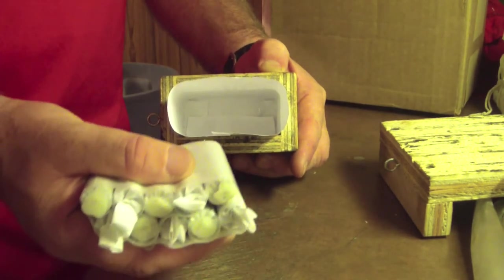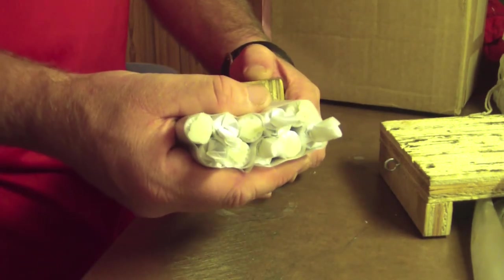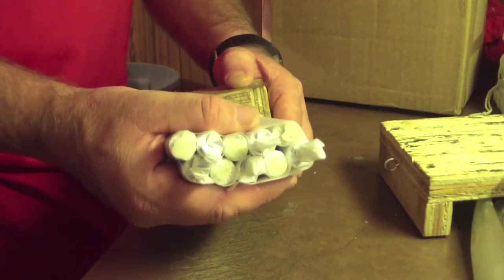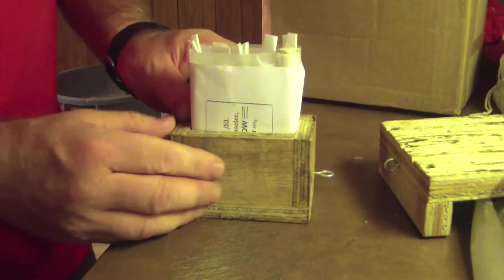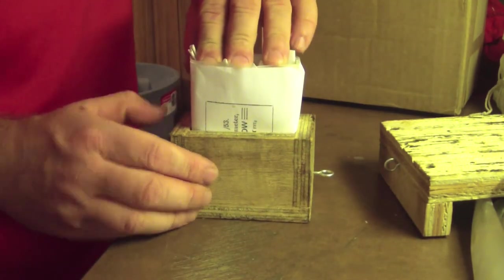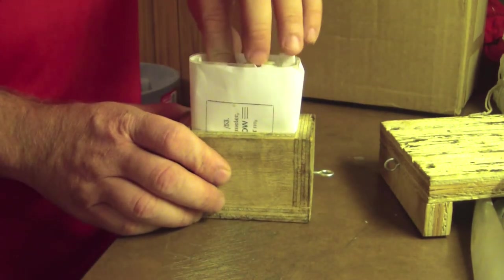We then take the bundle and insert it into the wrapper, which is being held by the support block. The tolerances here are quite small, so a bit of practice is required so that parts of the cartridge or of the waxed paper strip don't get caught up on the wrapper during insertion.